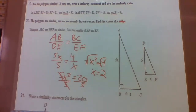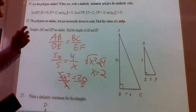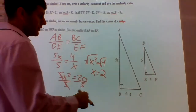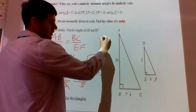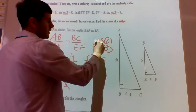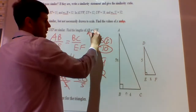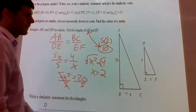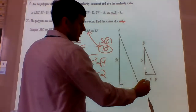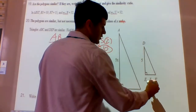They're asking us to find the lengths of AB and EF. AB is 5X, so 5 times 2 equals 10. So AB is 10, and EF is 21.